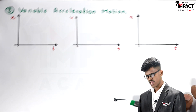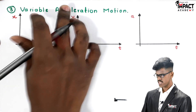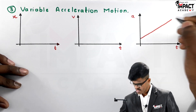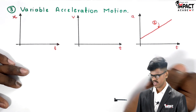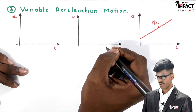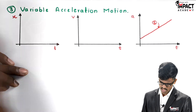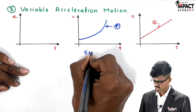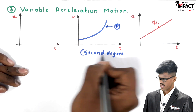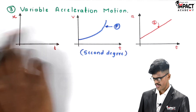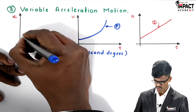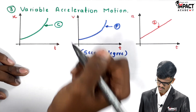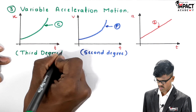Our third motion is variable acceleration motion. Here the acceleration keeps on changing, so the acceleration-time graph will be a straight inclined line. Then the velocity graph will have an increasing slope, making it parabolic in nature — a second degree equation. If we draw the displacement curve, the displacement will be cubic in nature, a third degree equation, because the slope of the parabolic velocity curve is itself increasing in a nonlinear way.